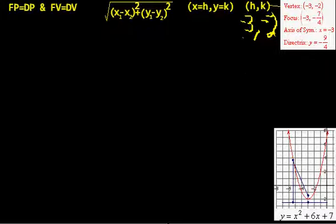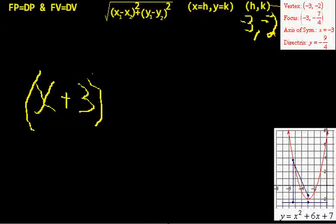Then let's put this in vertex form. If the vertex is minus 3, minus 2, then it's going to be x plus 3 quantity squared, and then minus 2. This is y equals.